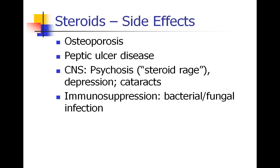Other side effects include osteoporosis — again, more for chronic long-term use of steroids. There's peptic ulcer disease and even bleeding ulcers. In the CNS, patients can get psychosis, the old roid rage, steroid rage that people have spoken about. A lot of people on steroids have a hard time sleeping or may feel very manic. Although later on, steroids can lead to depression. They can also cause cataracts in the eyes. And as we said, steroids are immunosuppressive, which is good if you're treating someone preventing rejection of an organ transplant, but it does put patients at increased risk for bacterial and fungal infections.